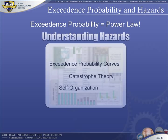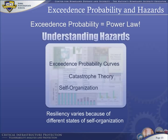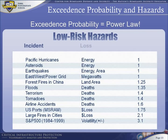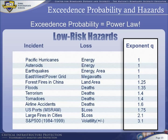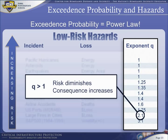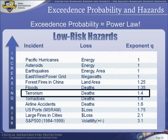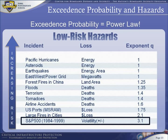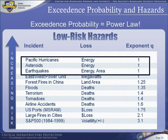Our critical infrastructure systems' resiliency varies because they are in different states of self-organization. Low risk hazards are defined as hazards that historically produce a high exceedance probability exponent Q. If Q is greater than 1, then risk diminishes as consequence increases. High consequence incidents are so rare that their risk contributions practically vanish. Note that terrorism is a low risk hazard. The financial sector, as defined by the S&P 500, is low risk. Earthquakes, asteroids, and Pacific hurricanes are on the border between high and low risk hazards.